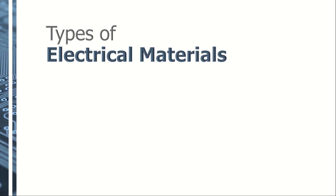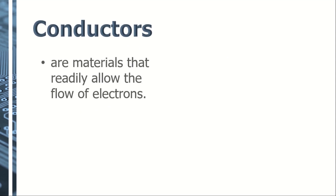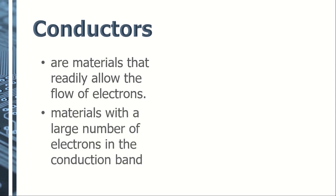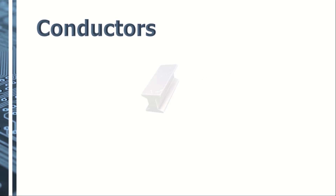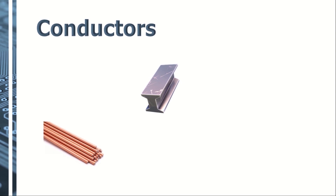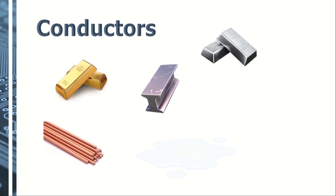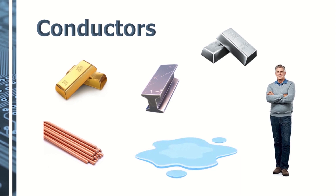There are three types of electrical materials: conductor, insulator, and semiconductor. Conductors are materials that readily allow the flow of electrons. They have a large number of electrons in the conduction band. This is because in this kind of material, the conduction band overlaps the valence band, and therefore electrons in the valence band can easily jump to the conduction band or vice versa. Most metals are good conductors such as iron, copper, even silver and gold. Other materials such as water and the human body are also conductors.